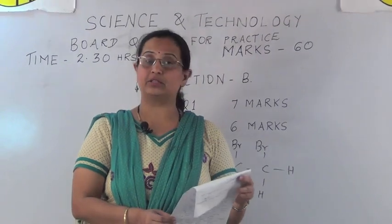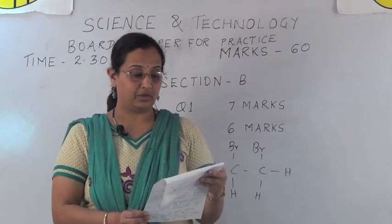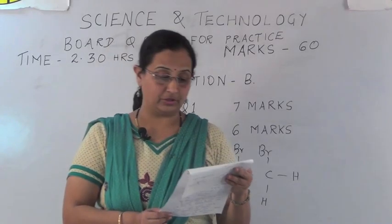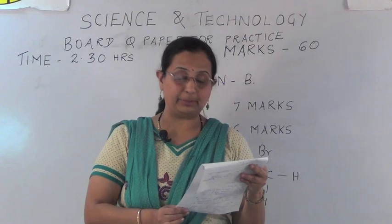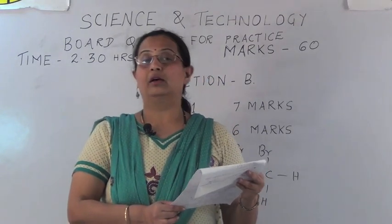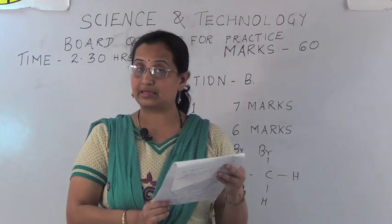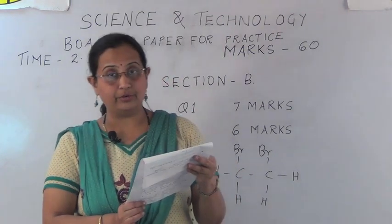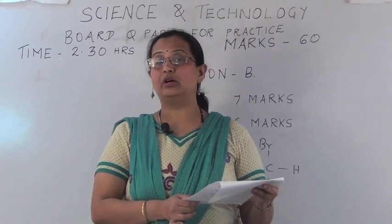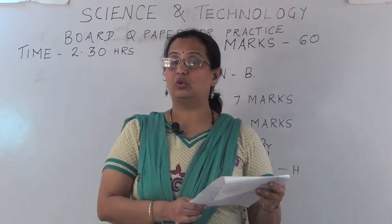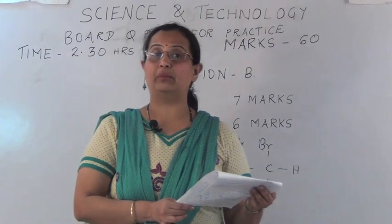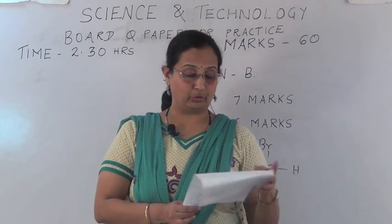Give reasons: breathing rate increases during vigorous exercise. Answer: the living body requires a constant supply of energy. Energy is in the form of ATP, released through oxidation of glucose in the cells. When vigorous exercise is done, there is more need for ATP and more oxygen is required during cellular respiration. Writing any two correct points earns one mark each.